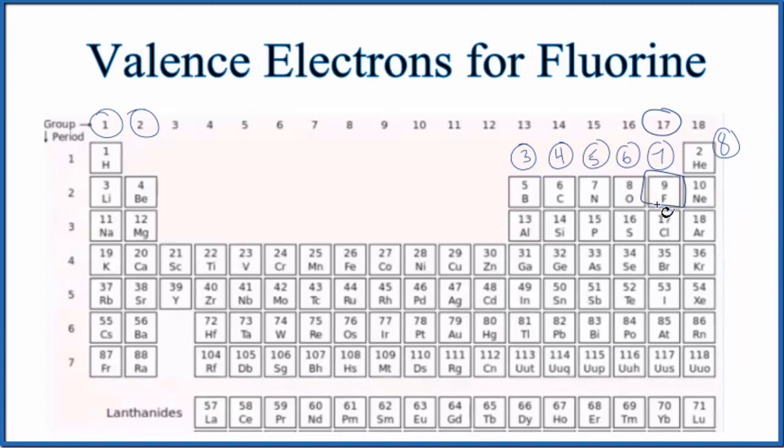The other way is we could write the electron configuration for fluorine. So fluorine has 9 protons. This is the atomic number. It tells us the number of protons. Since all of these atoms here on the periodic table are neutral, 9 protons, it'll also have 9 electrons.